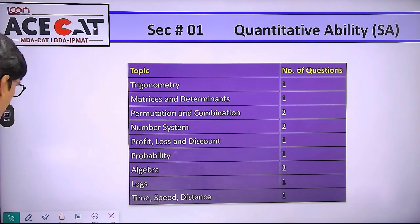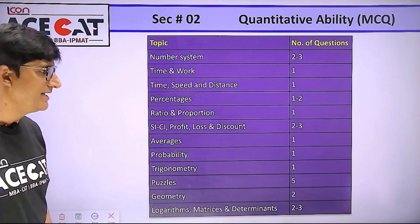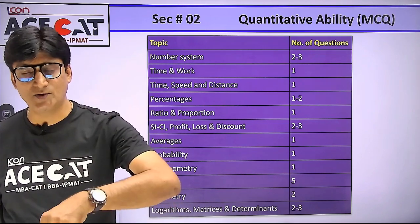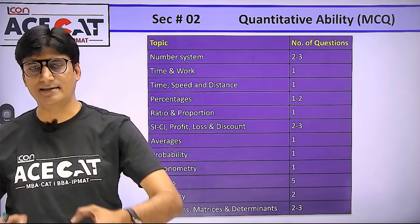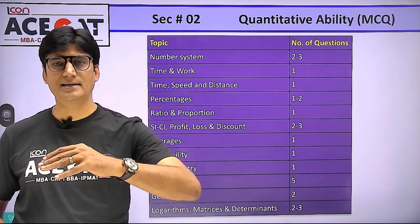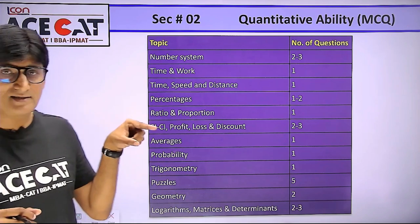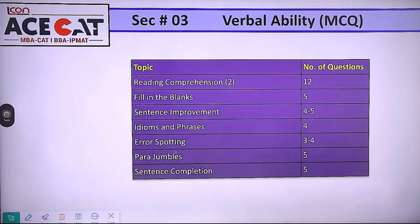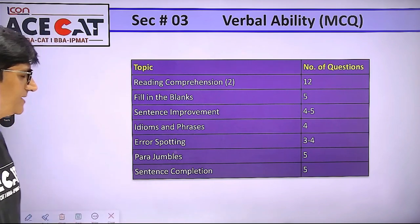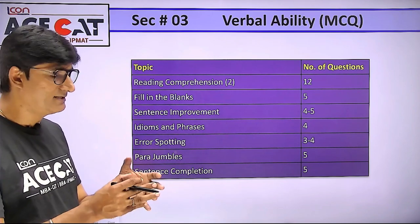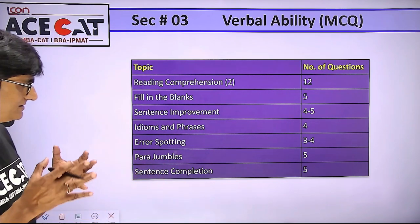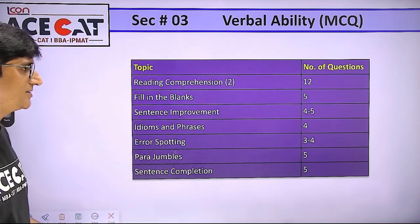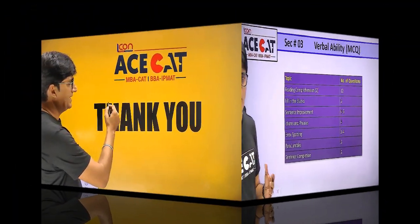This channel will have many more maths-related videos coming — so subscribe to this channel, like this video, and make this channel your companion throughout your journey. For the MCQ section, the cutoff was 43 out of 120. For the English section, the breakup was: Reading Comprehension — 2 sets, 12 questions total; fill in the blanks — 5 questions; sentence improvement (grammar); idioms and phrases; error spotting; para-jumbles — mostly non-MCQ, where you type the sequence; and sentence completion.